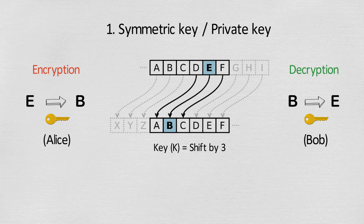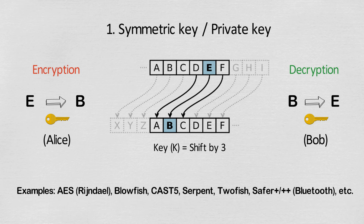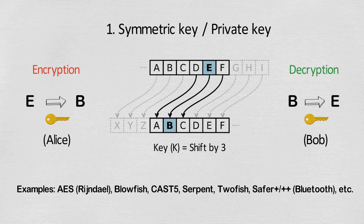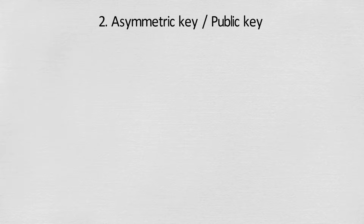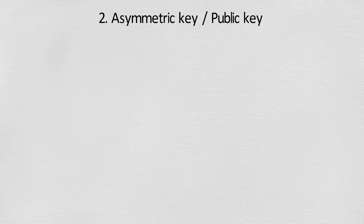Since the same key is required for both encryption and decryption, a secure channel is required to transmit the symmetric key. Anyone who gets hold of this key can read all their messages. If Alice wants to send a message to Bob using asymmetric public key cryptography, a different approach is needed.